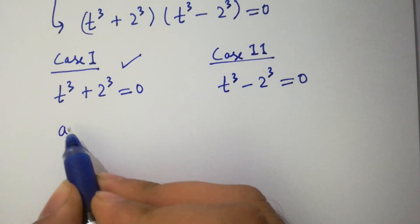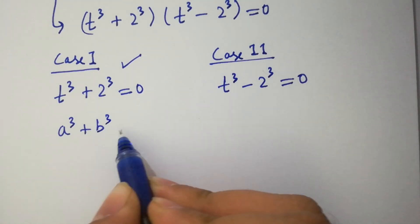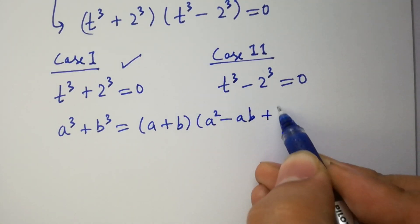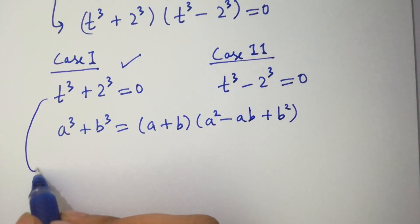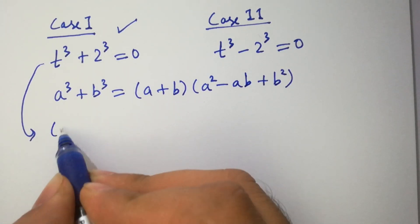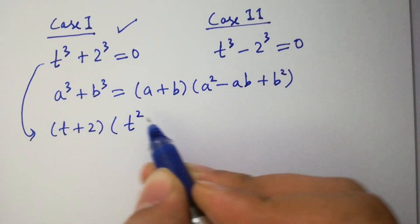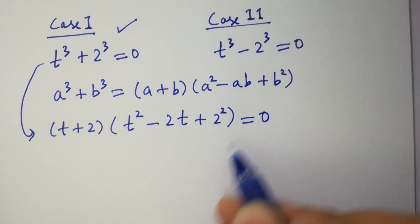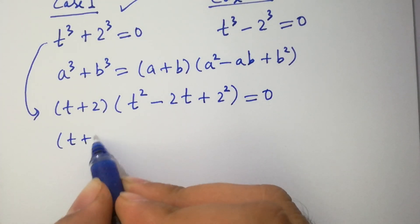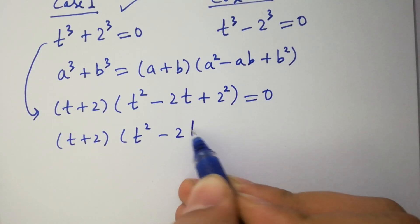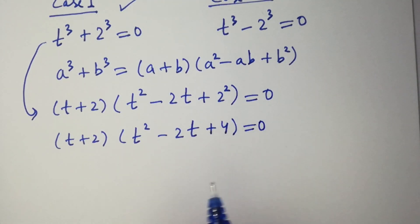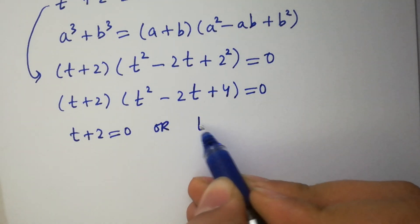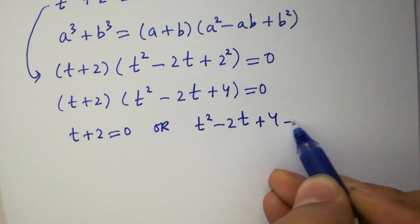Since a cubed plus b cubed equals a plus b times a squared minus ab plus b squared, it will be t plus 2, times t squared minus 2t plus 4, equal to 0. Either t plus 2 equals 0, or t squared minus 2t plus 4 equals 0.